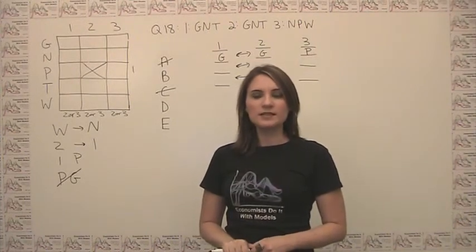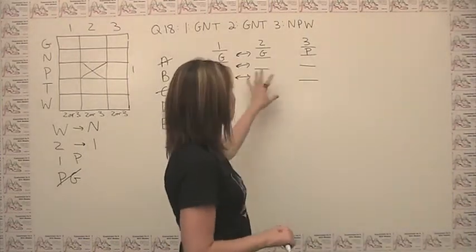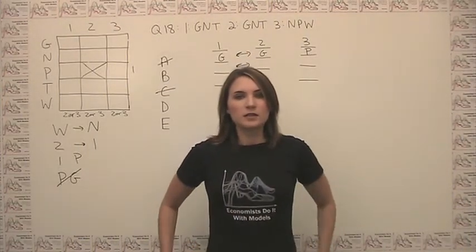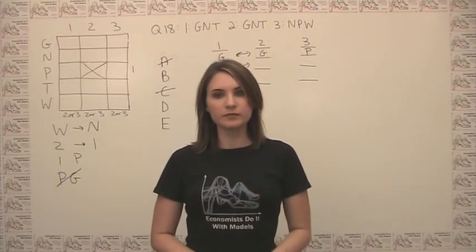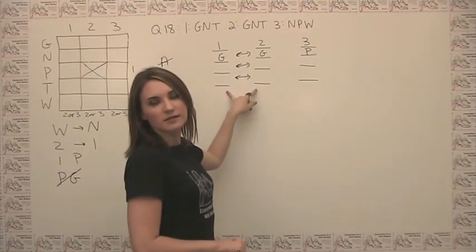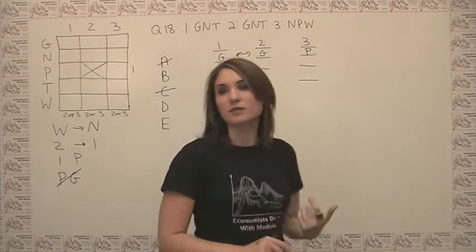Choice D says: only sensor 3 recycles tin. Again, we don't know anything about tin yet, so we'll let that be for now. Choice E reads: only sensor 1 recycles wood. If we look here, it's not possible for only sensor 1 to recycle anything. So we can get rid of that as an answer choice as well.